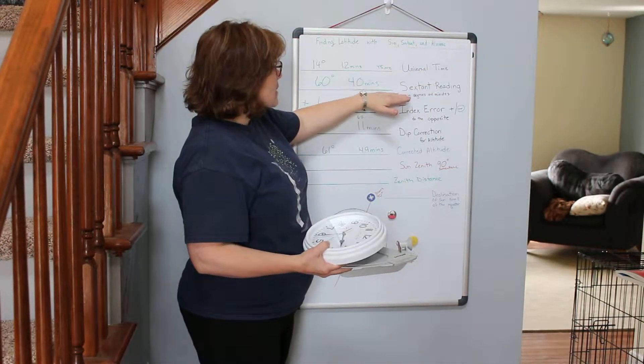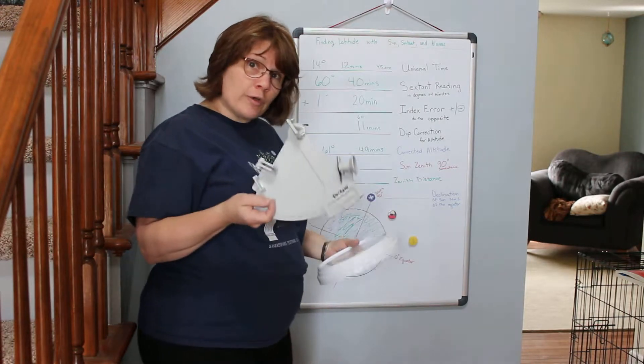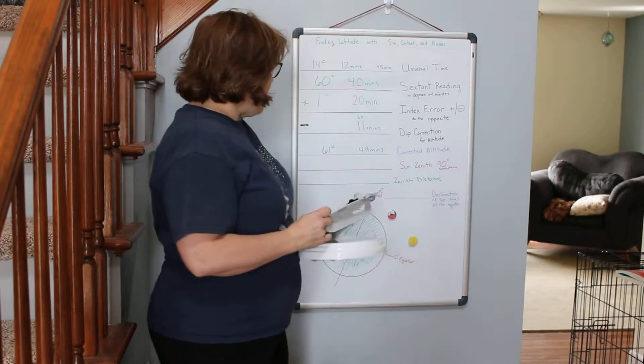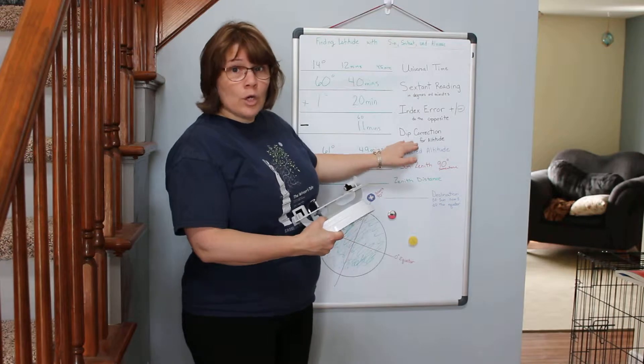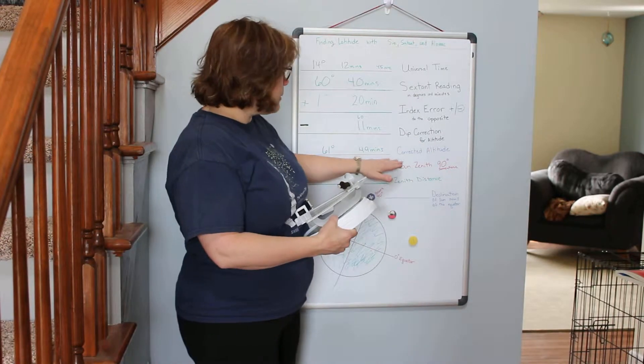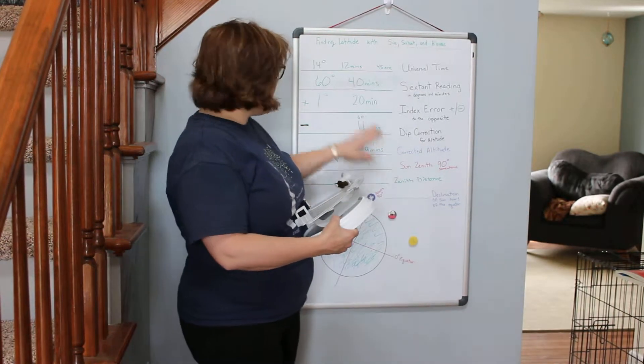We took our sextant reading, we knew how far off the manufacturing was on this sextant for this reading. We knew how high we were off the earth's surface and we got our corrected altitude by doing that little bit of math.